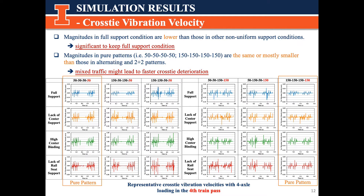When we do the comparison, we compare the dynamic behaviors under the same fourth train loading. The left 3 traffic patterns go into the same comparison group because their fourth trains have the same loading. The right 3 traffic patterns are put together for comparison. The pure pattern cases are highlighted with orange rectangles. From the results, we can observe that magnitudes in full support conditions are lower than other non-uniform support conditions. Interestingly, magnitudes in pure patterns are the same or mostly smaller than those in alternating and 2-plus-2 patterns. Such observations show us the significance of maintaining full support conditions, and suggest that mixed traffic might lead to faster cross-tie deterioration.